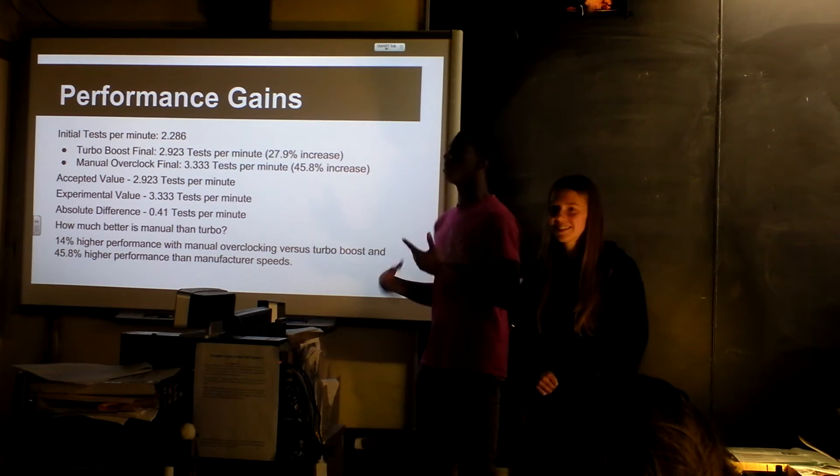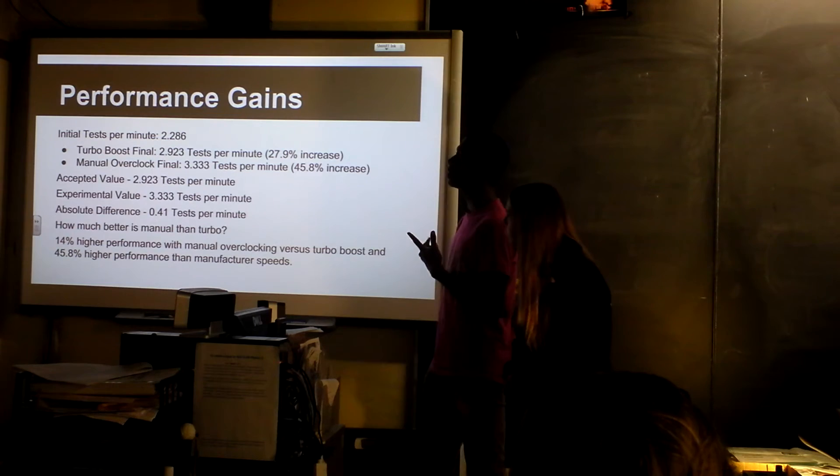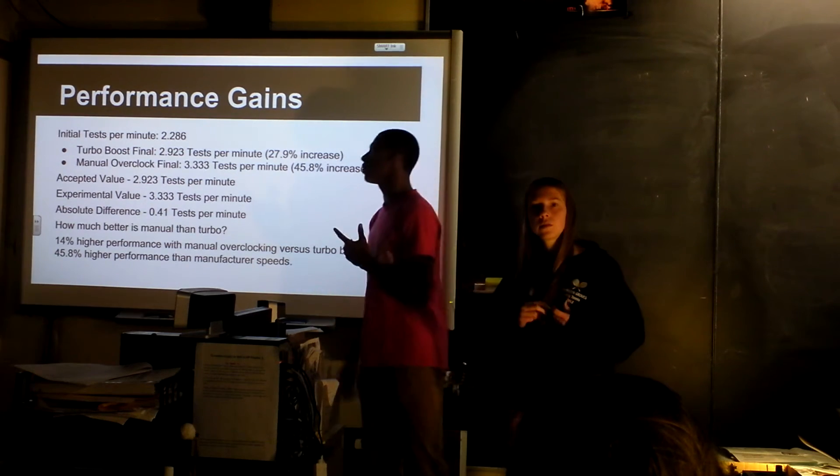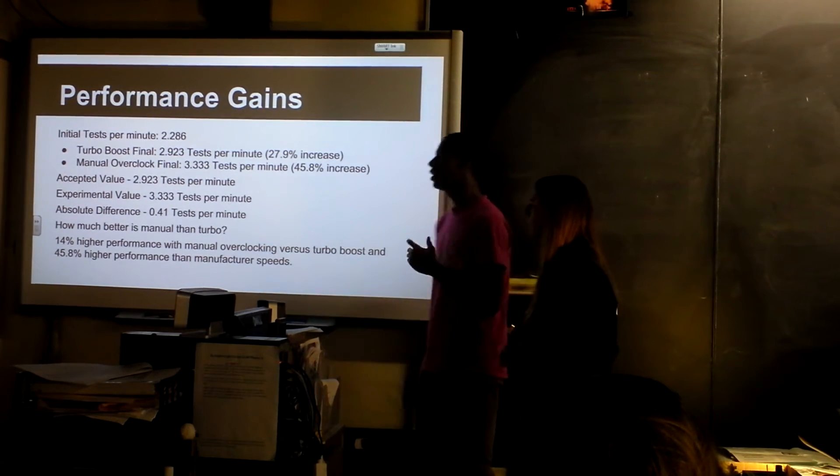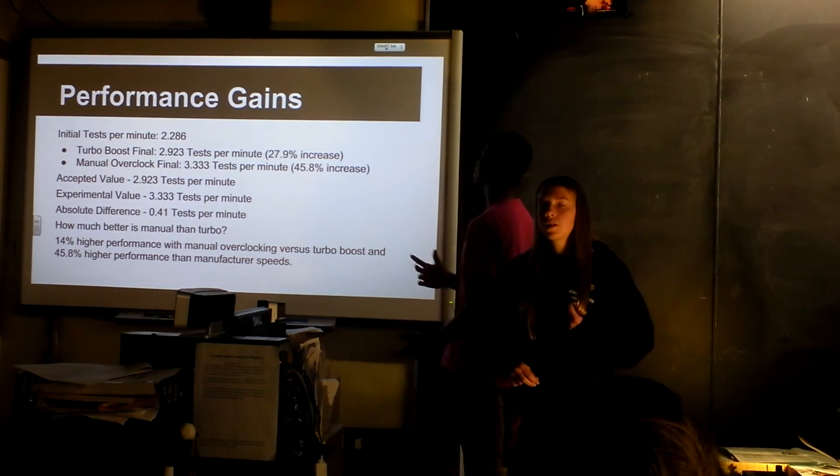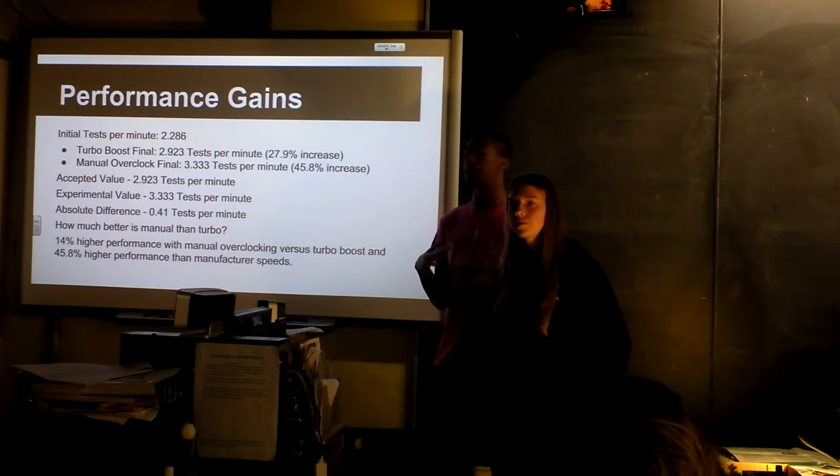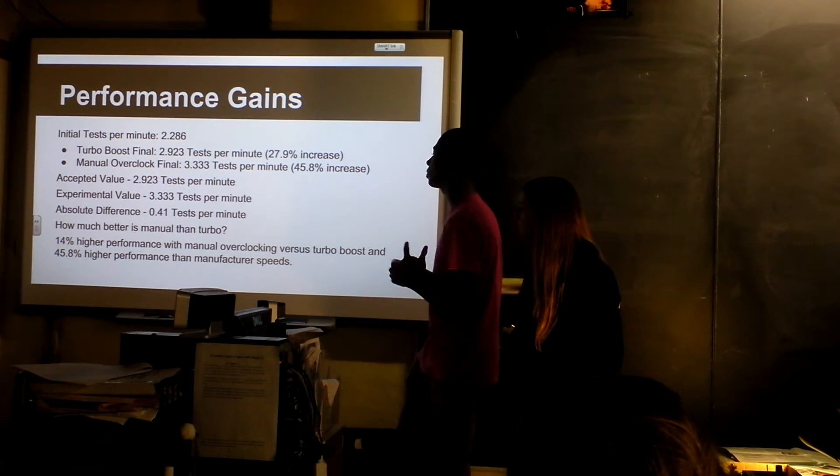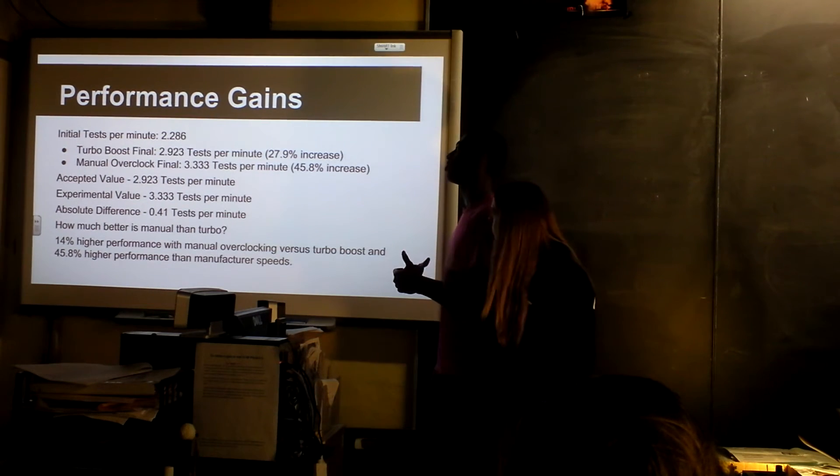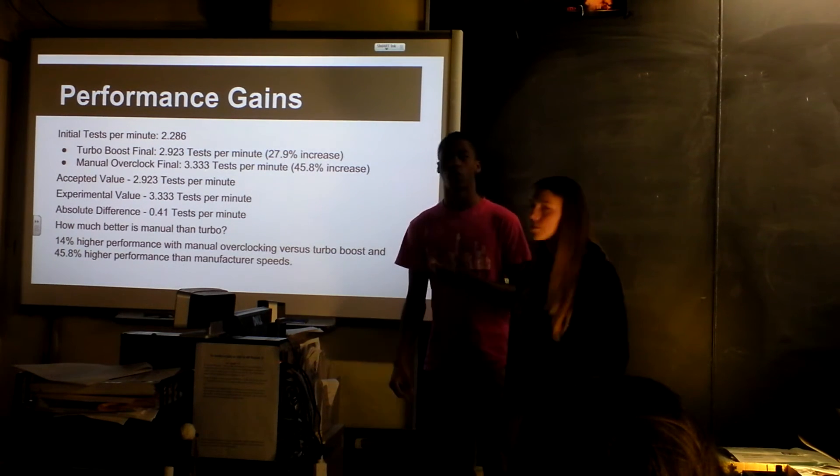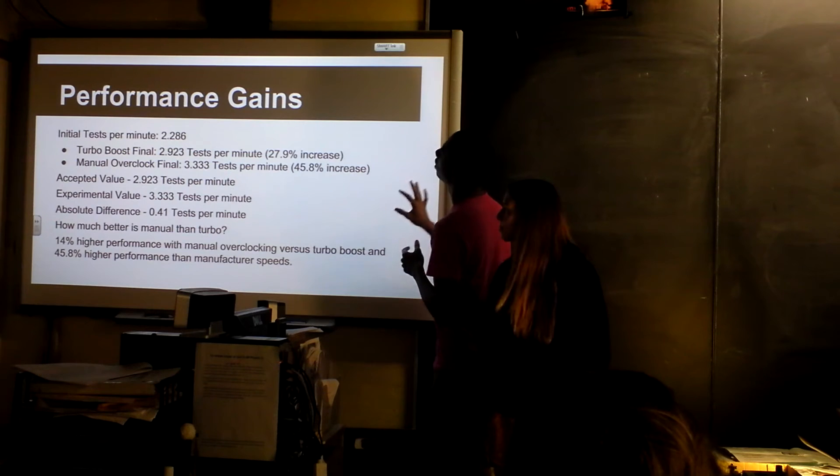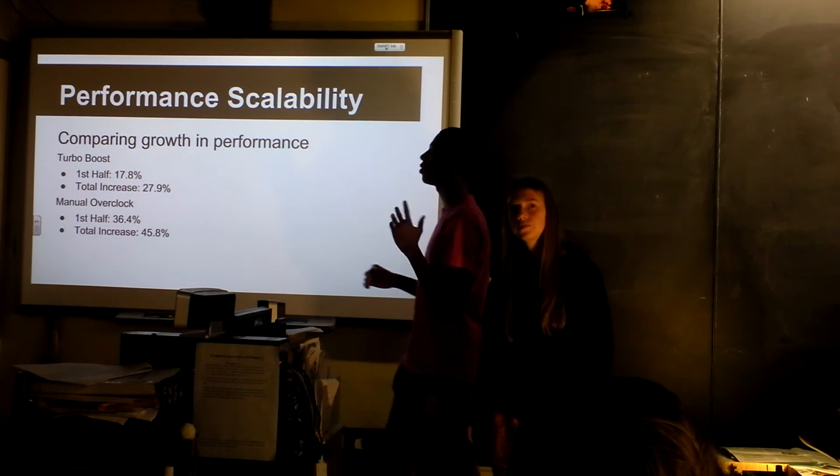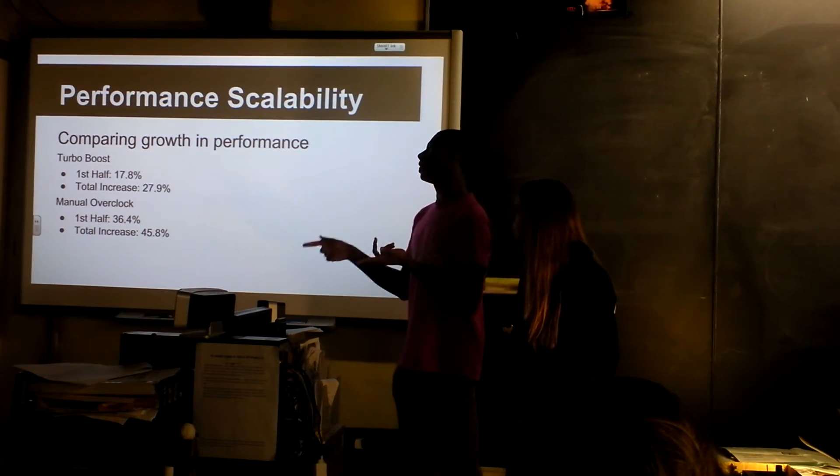Okay. And then this is an analysis of the processor performance. Initially, it was doing 2.286 tests per minute, and then with turbo boost, it was doing 2.923, which is a 28-ish percent increase. And with manual overclock, we got to do 3.333 tests per minute, which is a 45.8 percent increase from the manufacturer standard. So manual overclocking got us a 14 percent higher performance than turbo boosted, and 46 percent higher than manufacturer, which is really awesome. And we predicted 20 percent, so that's way higher than we predicted. And then this is just analysis of the diminishing returns. They both increased a lot more during the first half than we did in the second half, more so with the manual than the turbo boost.